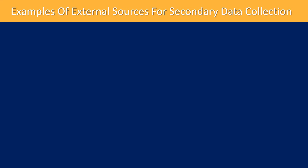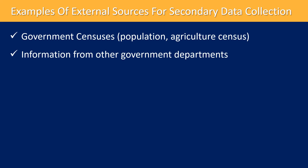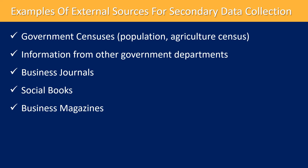External sources for secondary data collection include government censuses such as population census and agriculture census, information from other government departments such as social security and tax records, business journals, business magazines, libraries, and the internet, where a vast amount of knowledge on various topics is readily available.